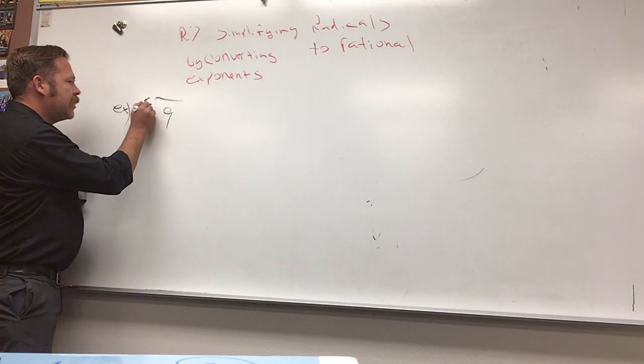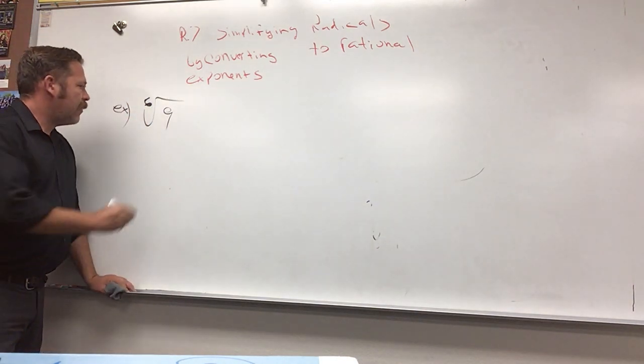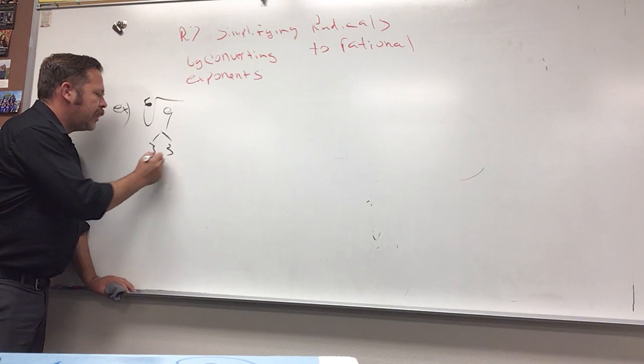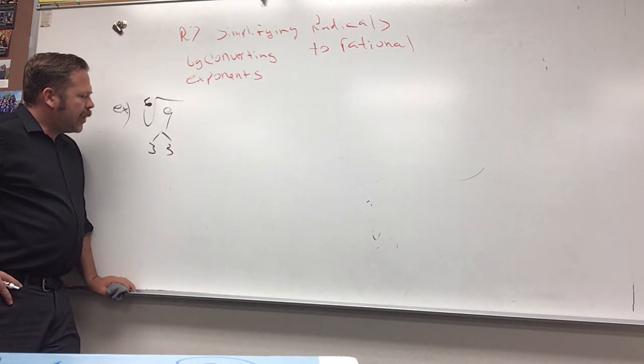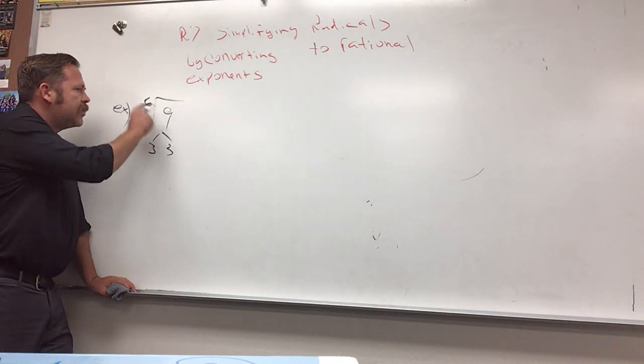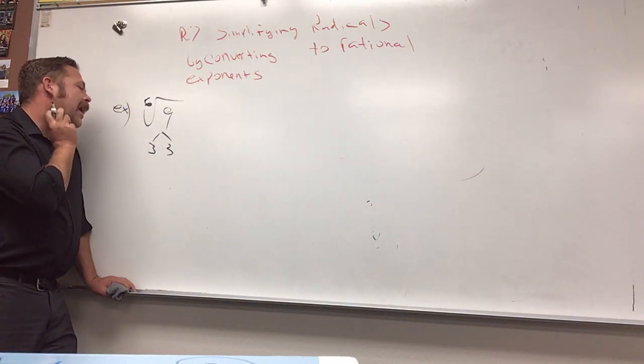I've got here the sixth root of nine. So, at first glance, you're gonna think, I only have a pair of threes, right? So, why isn't this simplified? Because I would need six threes to bring something out.